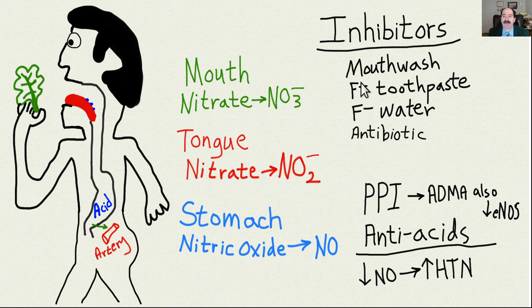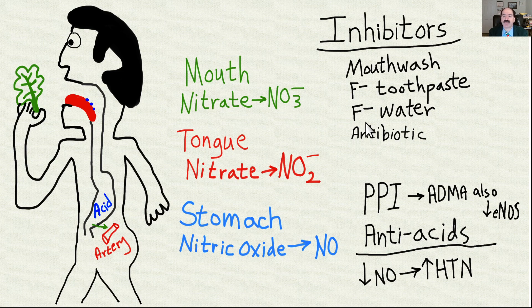There are some things that inhibit this pathway. The bacteria on the top of your tongue don't like mouthwash — mouthwash will kill these bacteria and they won't be able to convert nitrates (NO3) into nitrites (NO2). Fluoride toothpaste will do the same thing. Potentially, fluoridated water and antibiotics can also have a harmful effect on those bacteria, all of which are detrimental to the conversion of nitrate into nitrite.